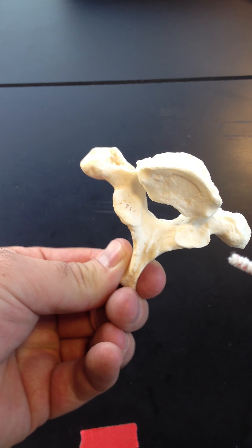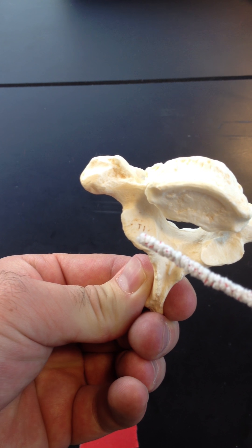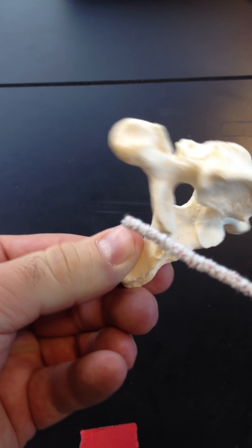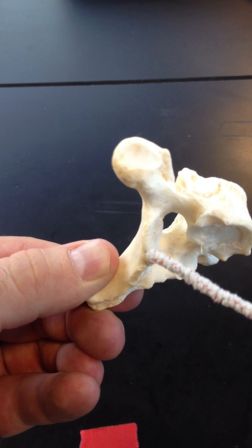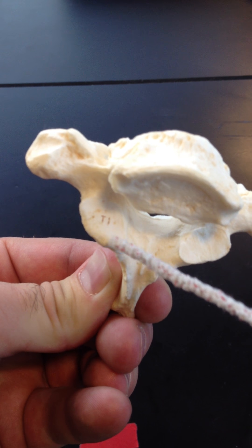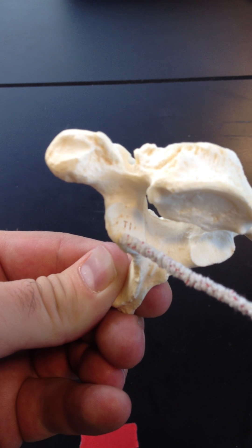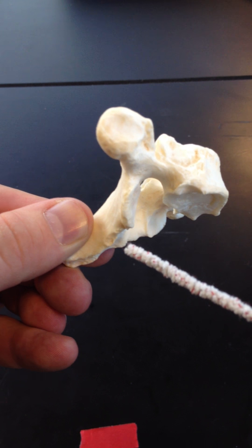And then from the inferior view, we're going to have inferior articular processes. It's a kind of bridge-like process. And the smooth part, inferior articular facet, which would then articulate with T2.